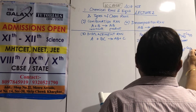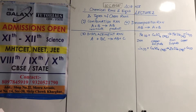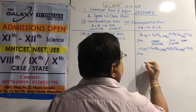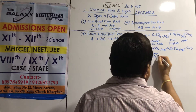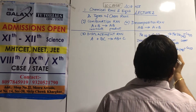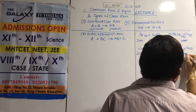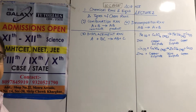Second example: zinc plus copper sulfate aqueous gives zinc sulfate aqueous plus copper solid. Similarly, if you have zinc granules or a strip of zinc and put it in copper sulfate, you get zinc sulfate and copper is set free, deposited on the vessel wall or on the zinc.